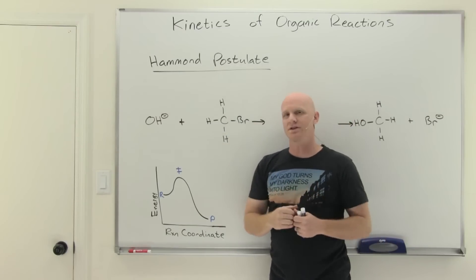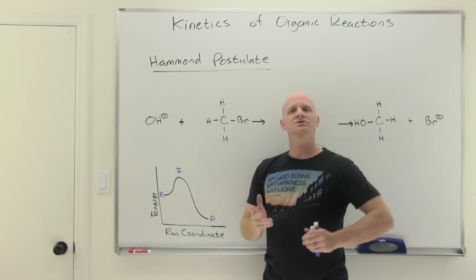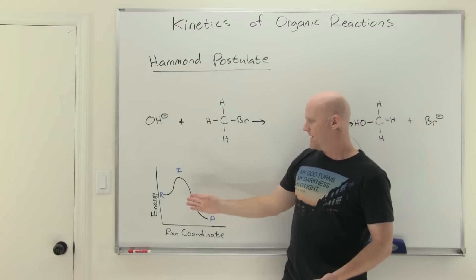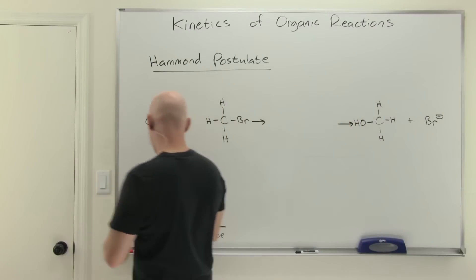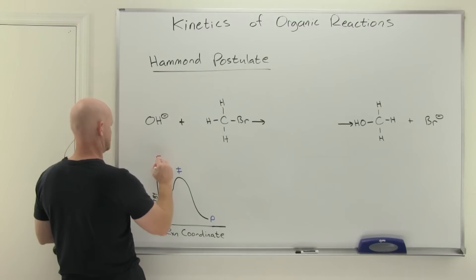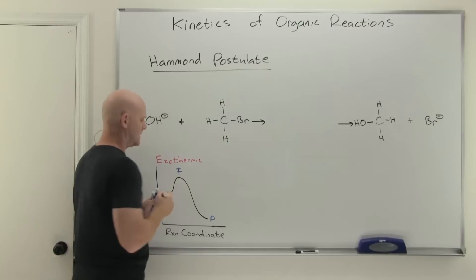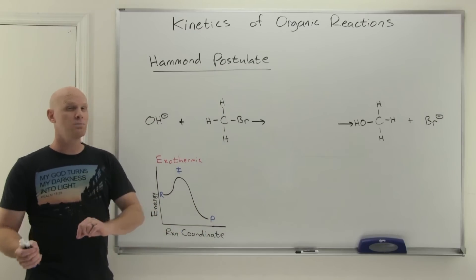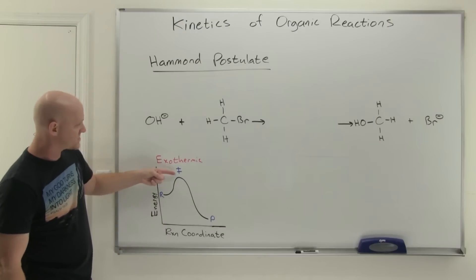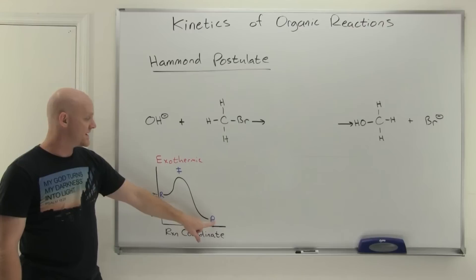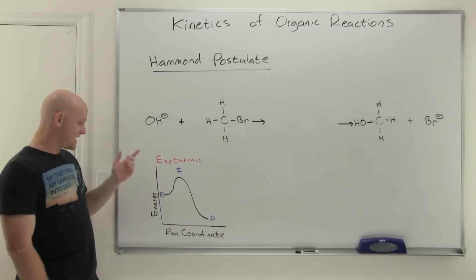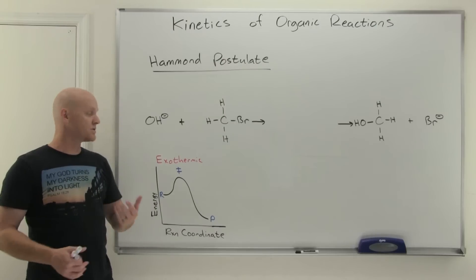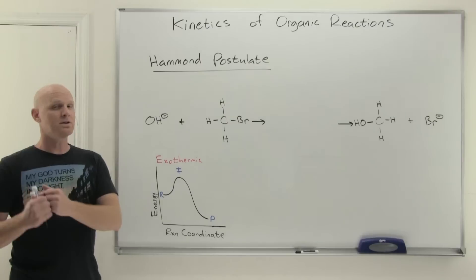Next I want to talk about the Hammond postulate. The Hammond postulate tells you something about what your transition state looks like. Looking at this reaction coordinate diagram for a single-step reaction — with the product being lower energy than the reactant, this is an exothermic reaction. The Hammond postulate tells you that your transition state is going to look both like your reactant and your product, but typically more like whichever one it is closer in energy to. For an exothermic step, the transition state is closer in energy to the reactant, so it'll look more like the reactant. For an endothermic step, the transition state would look more like the product.